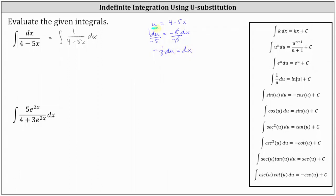Now we can substitute u for the denominator 4 minus 5x, and we can substitute negative 1/5 du for dx. We factor out the negative 1/5 and we have du, and 1 divided by the quantity 4 minus 5x becomes 1 divided by u.